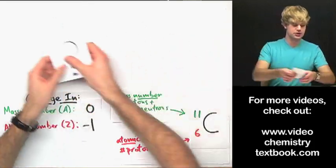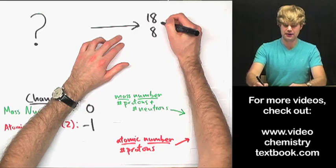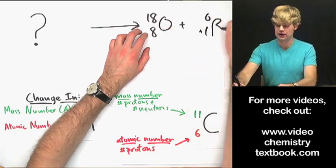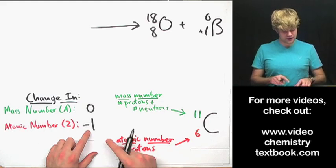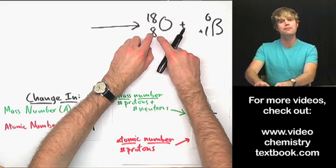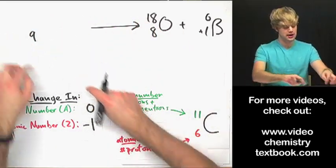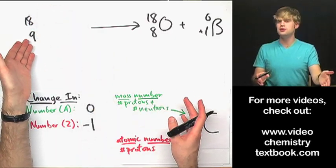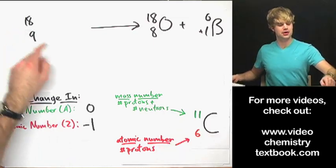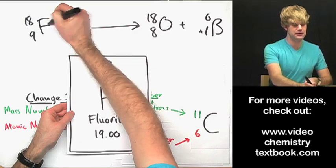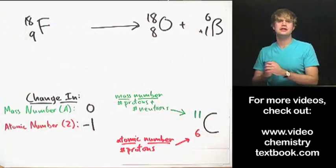One more — this time we start with a mystery element. After this mystery element undergoes positron decay we get an atom of oxygen-18 as well as a positron. So what did we start with? The atomic number goes down one in positron decay, so it used to be one bigger. Oxygen has eight protons, so I started with an atom that had nine protons. The mass number didn't change: 18. Which element has an atomic number of nine? That's fluorine — big capital F. This is the equation for the positron decay of fluorine-18.